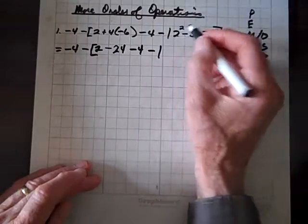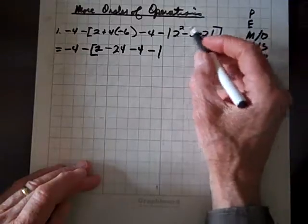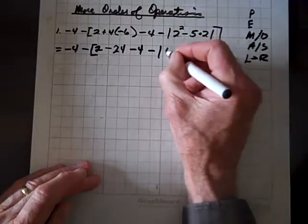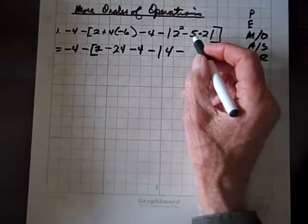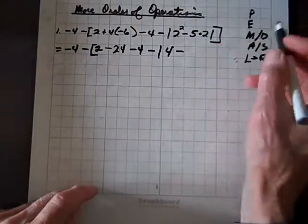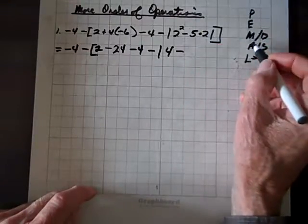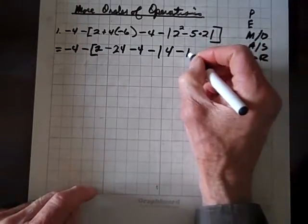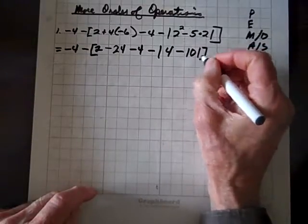Exponents come before addition, subtraction, or multiplication. So if we square two, we get four. Then: do we subtract five from four, or multiply five times two? Order of operations says multiplication before addition or subtraction, so five times two is ten. Absolute value of that.